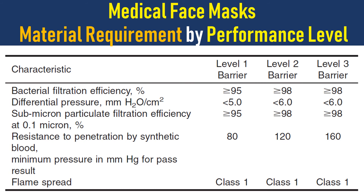Differential pressure, which represents breathing resistance, should be less than five for level one barrier. For level two it should be less than six, and for level three it should also be less than six.